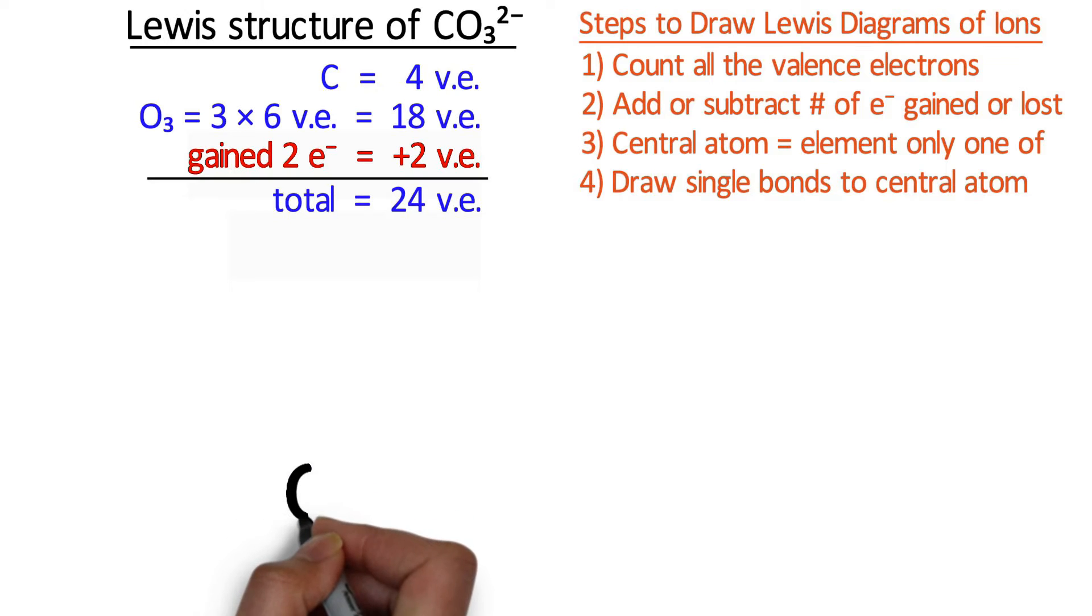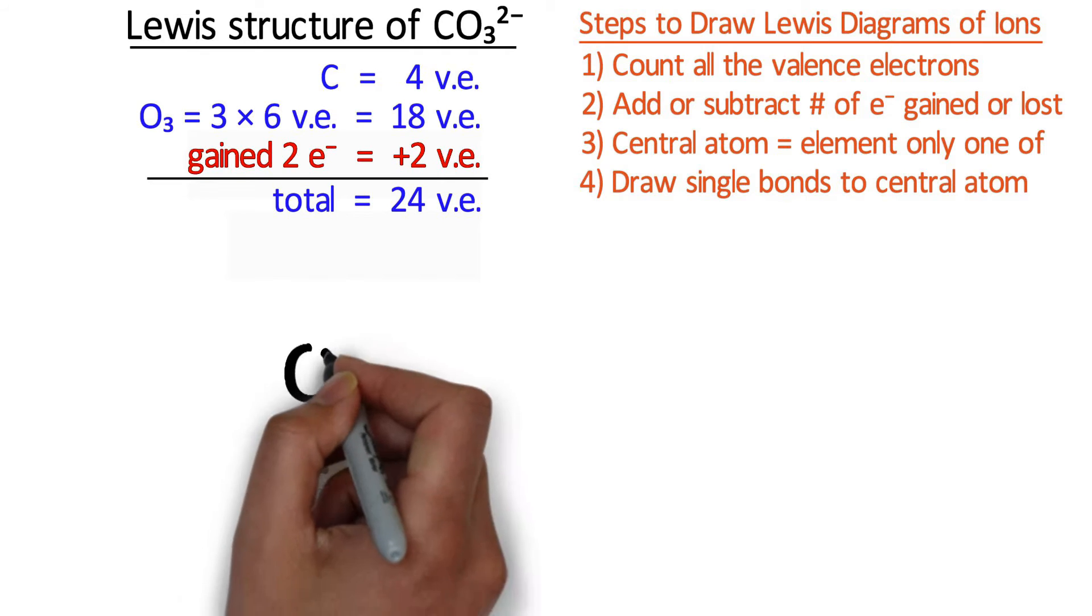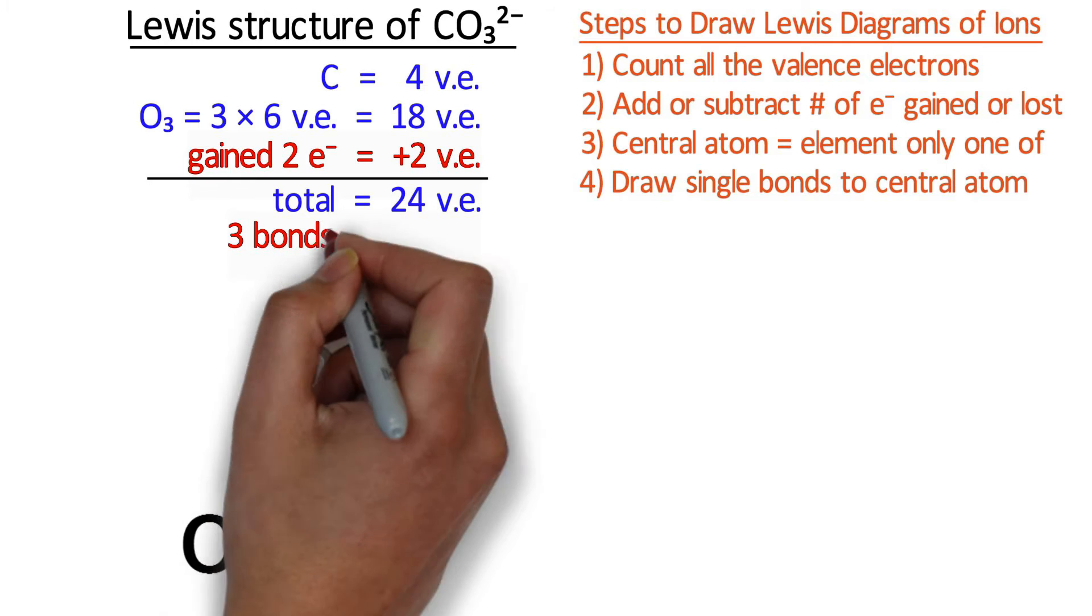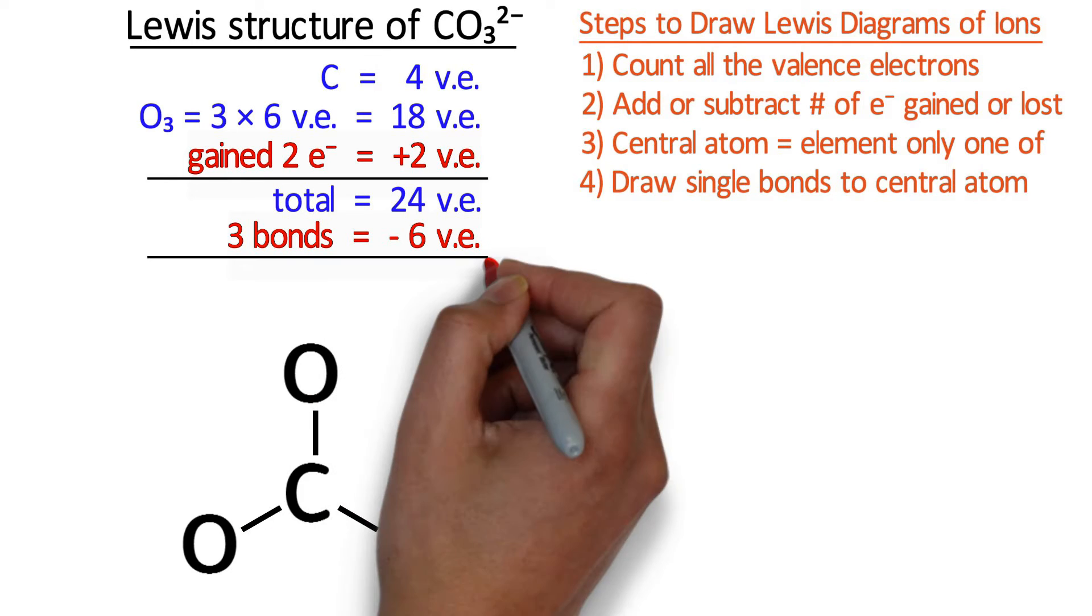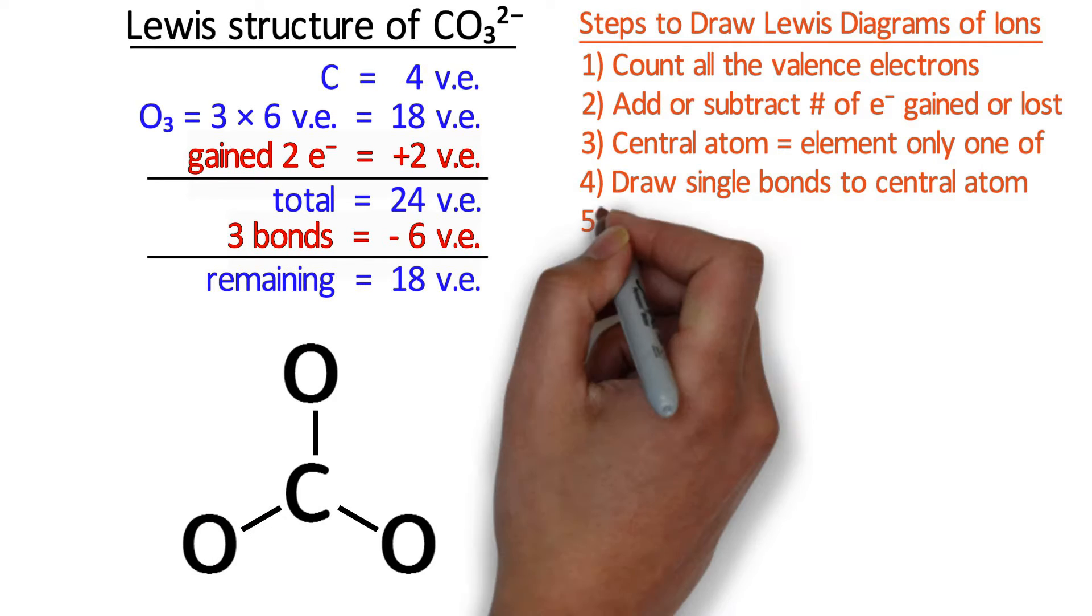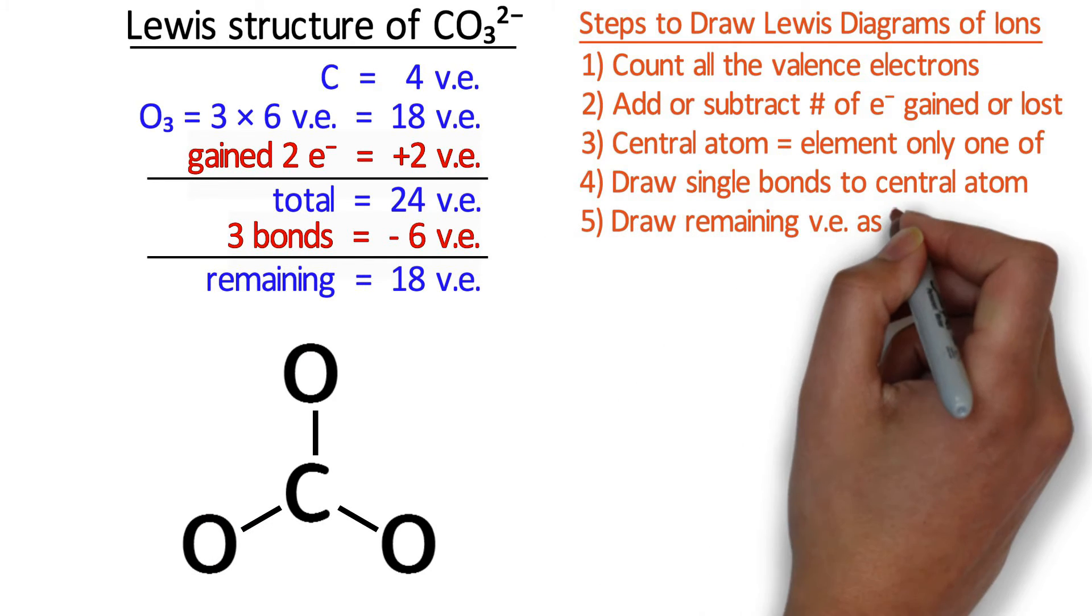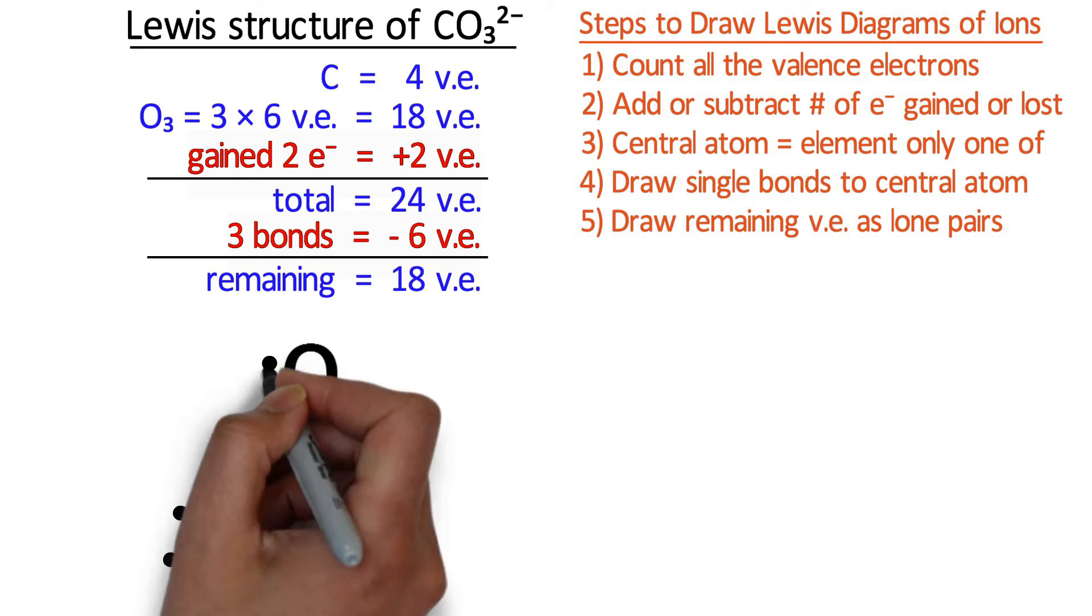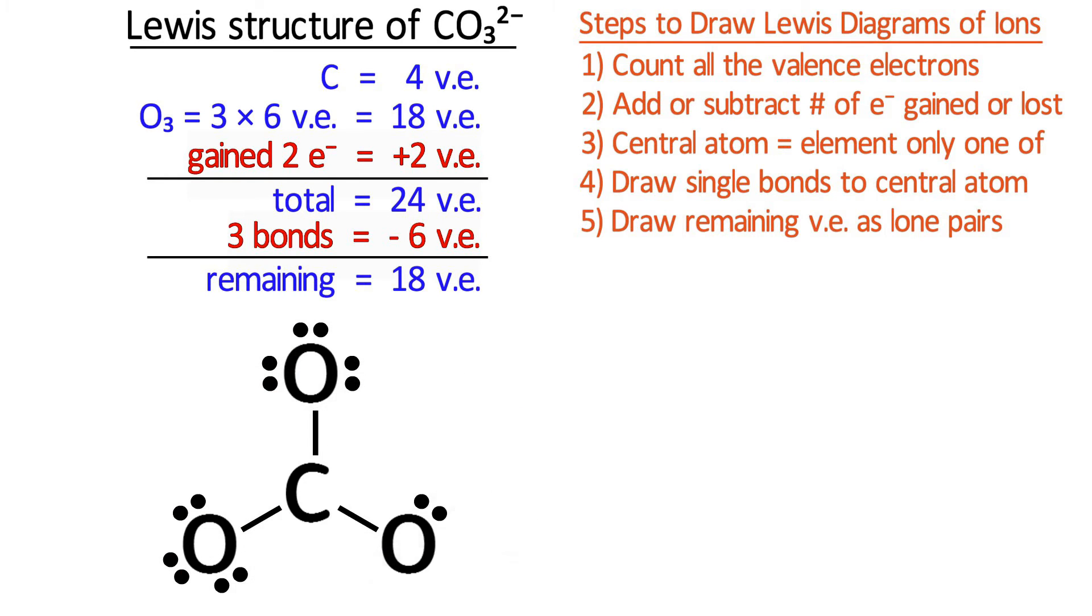Next, the central atom is carbon because there is only one carbon and carbon tends to form more bonds than oxygen. We draw single bonds between carbon and each oxygen and in doing so, we have used up 6 valence electrons, which means we have 18 remaining for lone pairs. I normally put the lone pairs on the non-central atoms first. 2, 4, 6, 8, 10, 12, 14, 16, and 18.